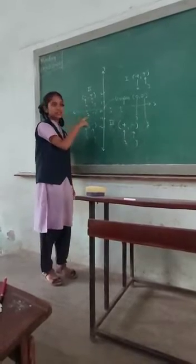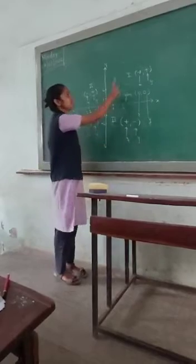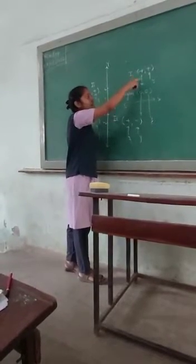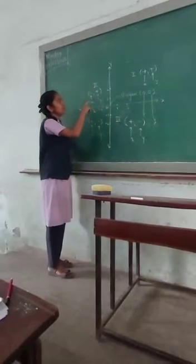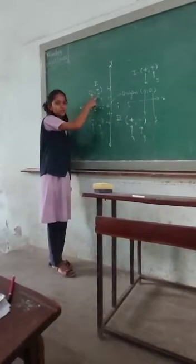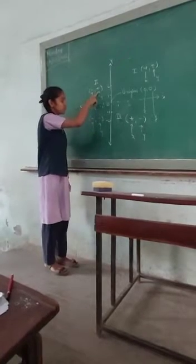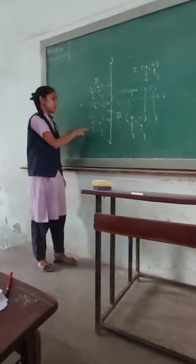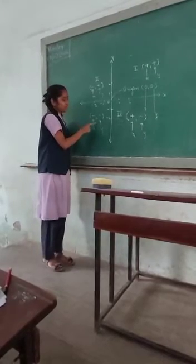The axes divide the plane into 4 parts. Each part is called a quadrant. First quadrant: positive positive — X coordinate is positive and Y coordinate is positive. Second quadrant: negative positive — X coordinate is negative and Y coordinate is positive. Third quadrant: negative negative — X coordinate is negative and Y coordinate is negative.